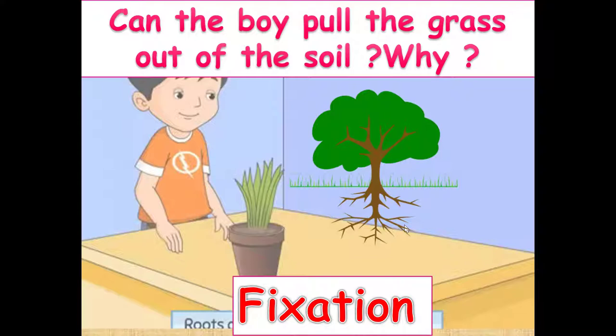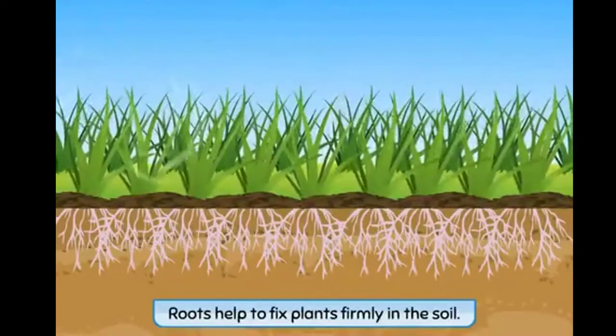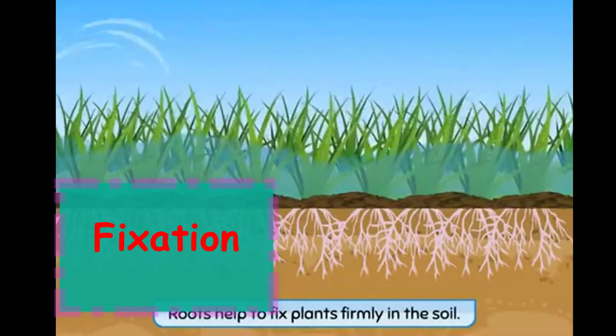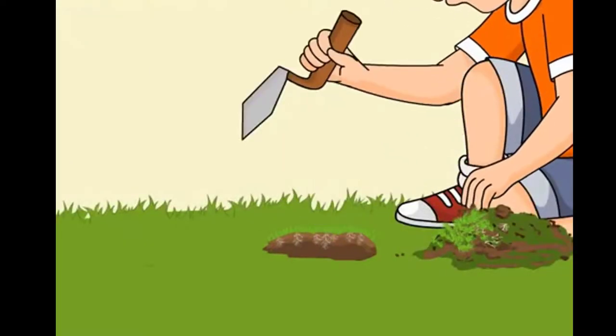So the root held the tree to remain firmly fixed to the ground. Thus the roots function to prevent the plants from being uprooted by fast wind and flowing water.